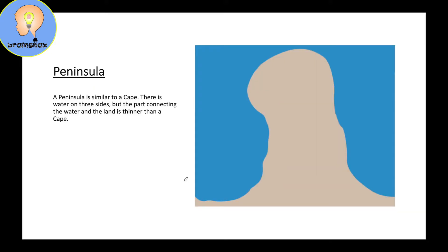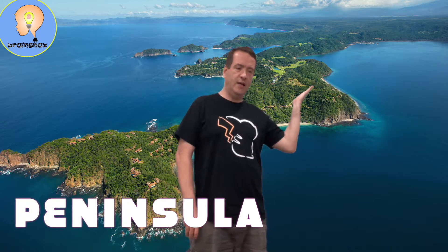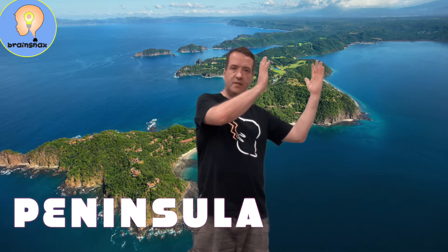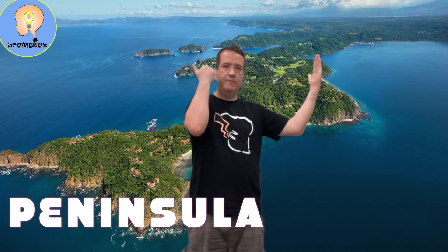The next landform I want to discuss is a peninsula. A peninsula is similar to a cape — there is water on three sides: water here number one, water here number two, and water over here number three. But the part connecting the water and the land here is thinner than a cape. Here behind me is a peninsula, where the land comes down into the water. The most important part to look at is up at the top — it's not thick like the others we were just looking at.